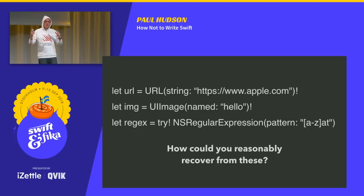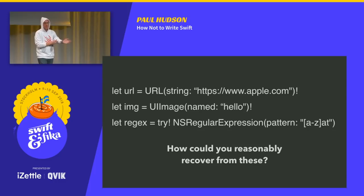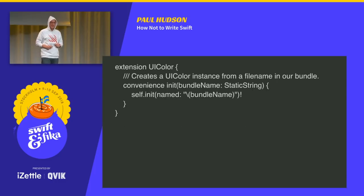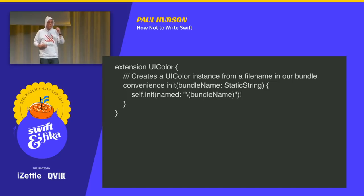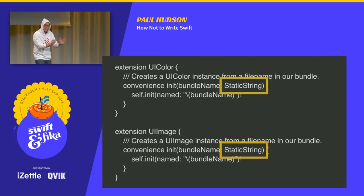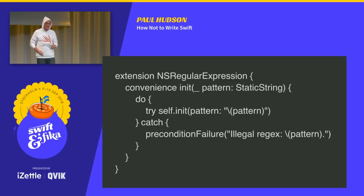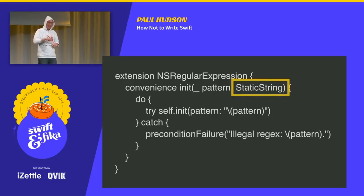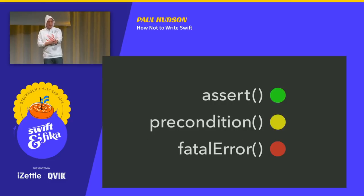If you use SwiftLint and don't want force unwraps everywhere, extensions like this work wonders. This adds a UIColor convenience initializer which force unwraps just once to ensure all your UI colors exist, and the same exists for UIImage. The magic is it uses a Swift static string — a string that cannot use string interpolation — so you cannot use it by accident on interpolated values. Similarly for try-catch, here's one for NSRegularExpression: static string, bails out if it's bad. Assertions should be absolutely everywhere, preconditions as appropriate, and fatalError when needed.